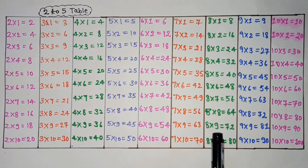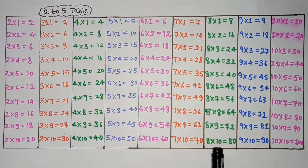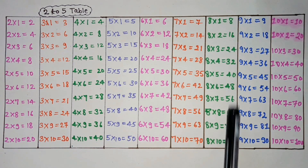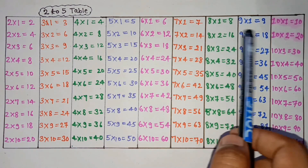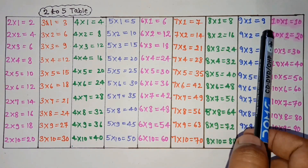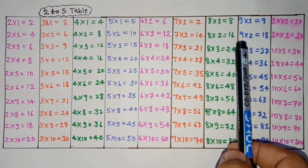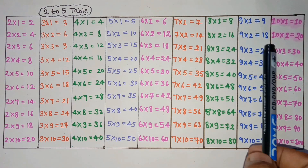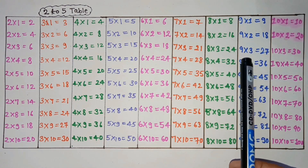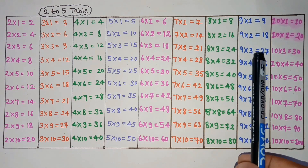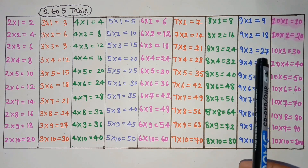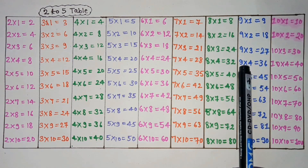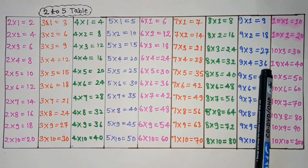8 nines are 72. 8 tens are 80. 9 ones are 9. 9 twos are 18. 9 threes are 27. 9 fours are 36.